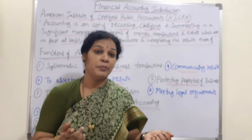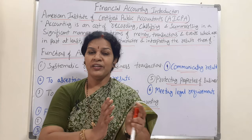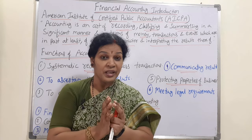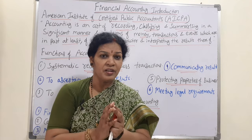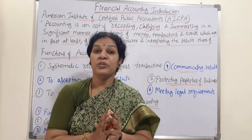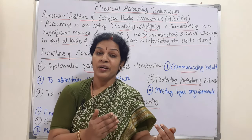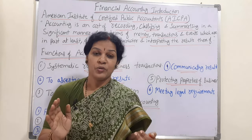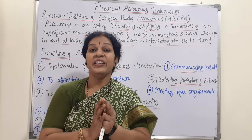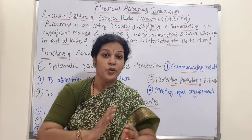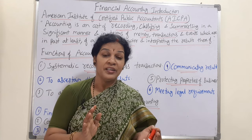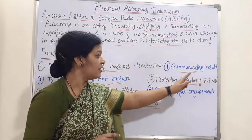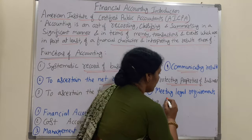Another function is protecting the properties of business. Through accounting, every transaction is prepared with a voucher or evidence, which shows exactly how much we are purchasing, selling, spending, and what our income is — everything in a transparent way. This shows that everything is going in a fair way with no manipulations, making it highly difficult to deceive. The sixth function is meeting legal requirements.